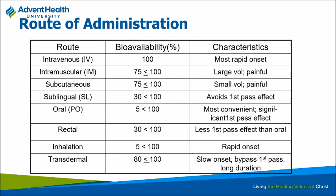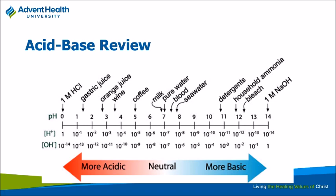Remember our chart for relative bioavailabilities for different routes. IV is always going to be 100%. Anything else is going to be more variable — depends entirely on the drug and the formulation. Normal serum pH is 7.35 to 7.45. Remember, 7.4 is a normal serum pH. 7.0, which is neutral, is actually fairly acidic for us.